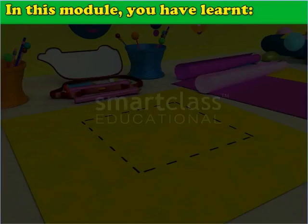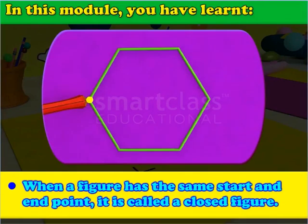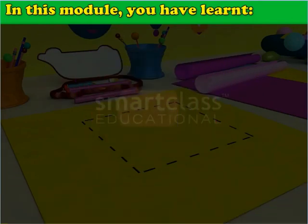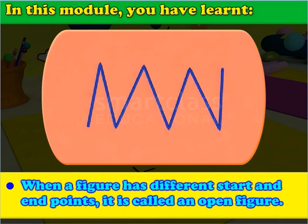In this module you have learned: when a figure has the same start and end point, it is called a closed figure. When a figure has different start and end points, it is called an open figure.